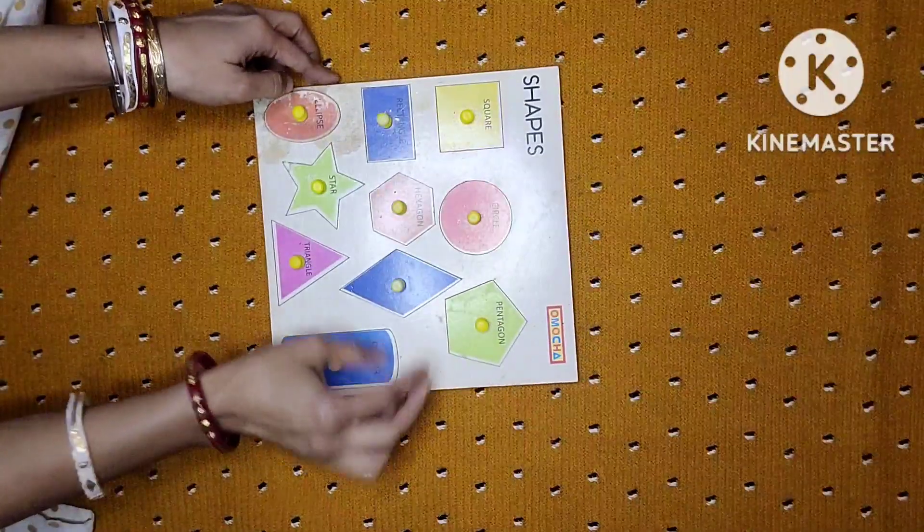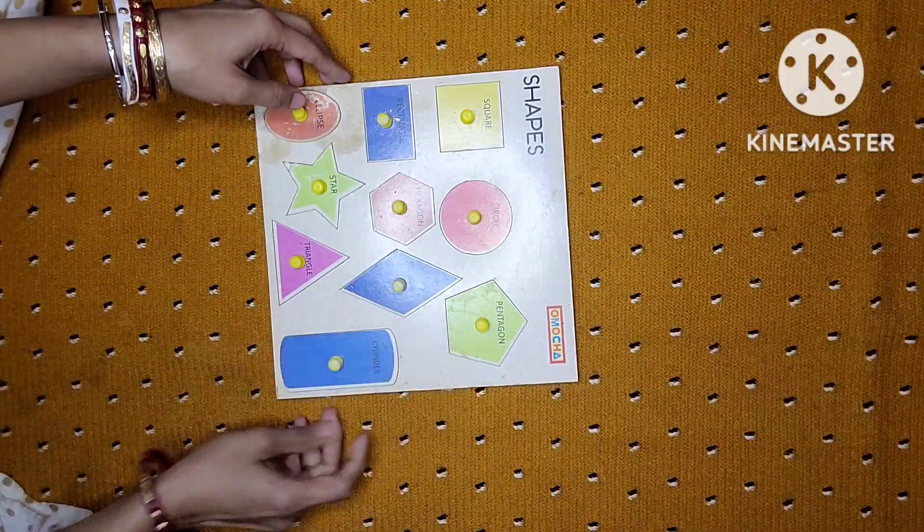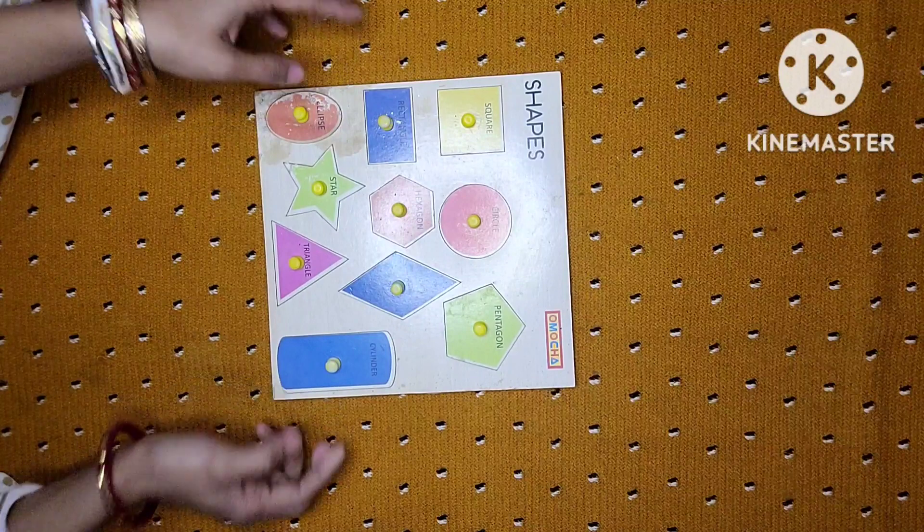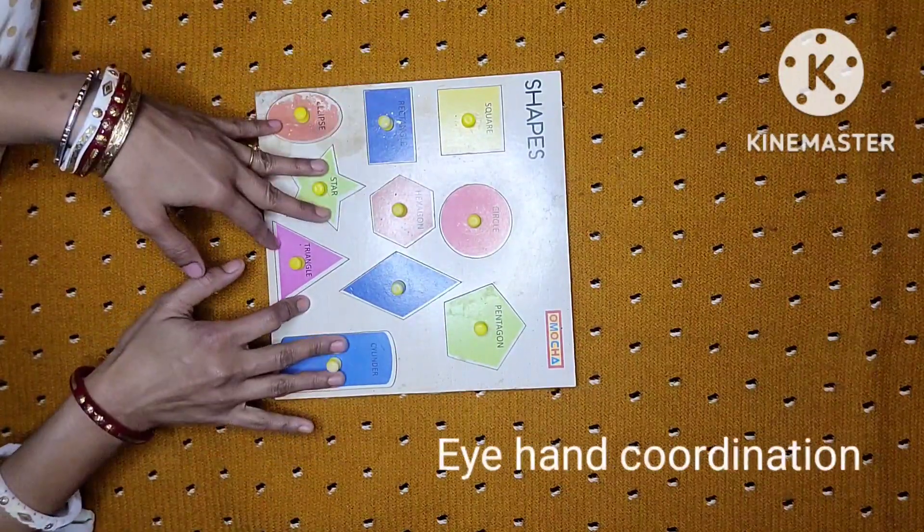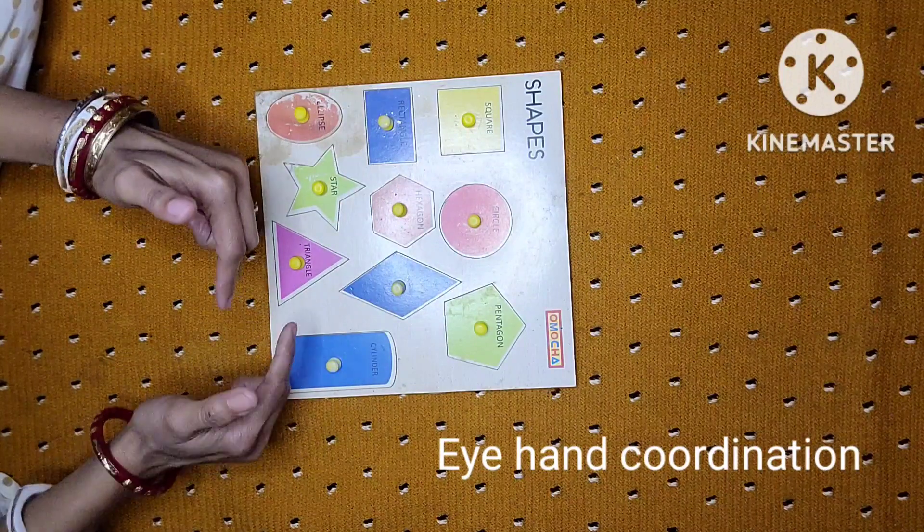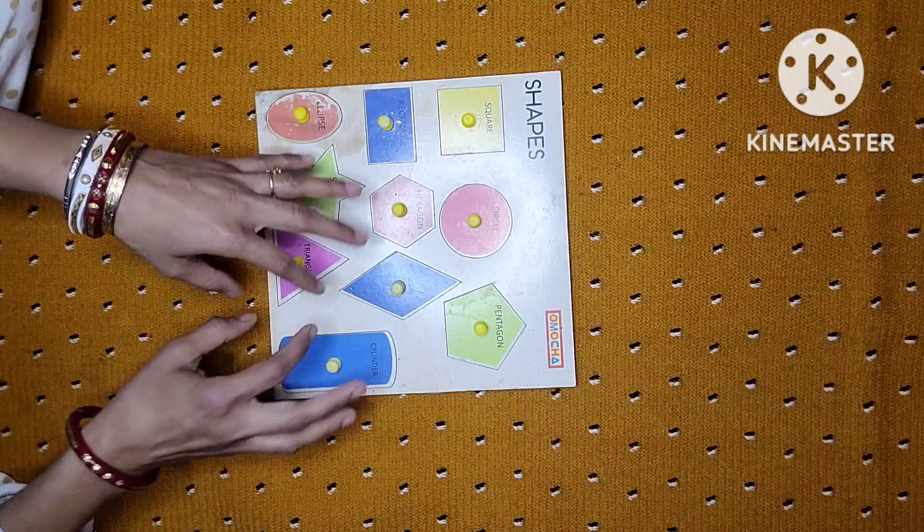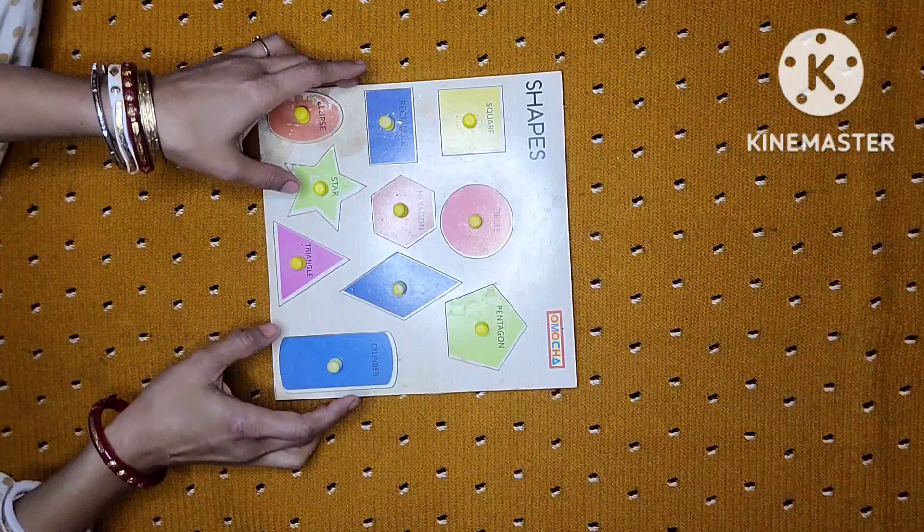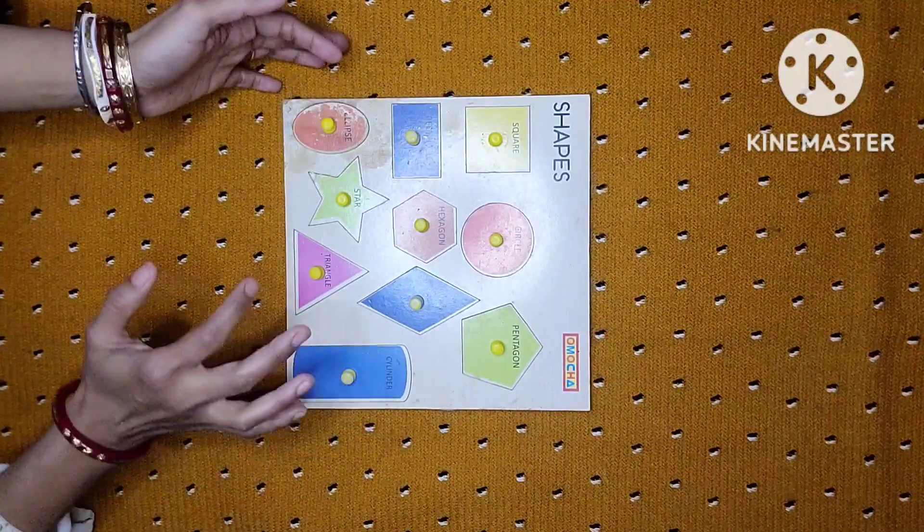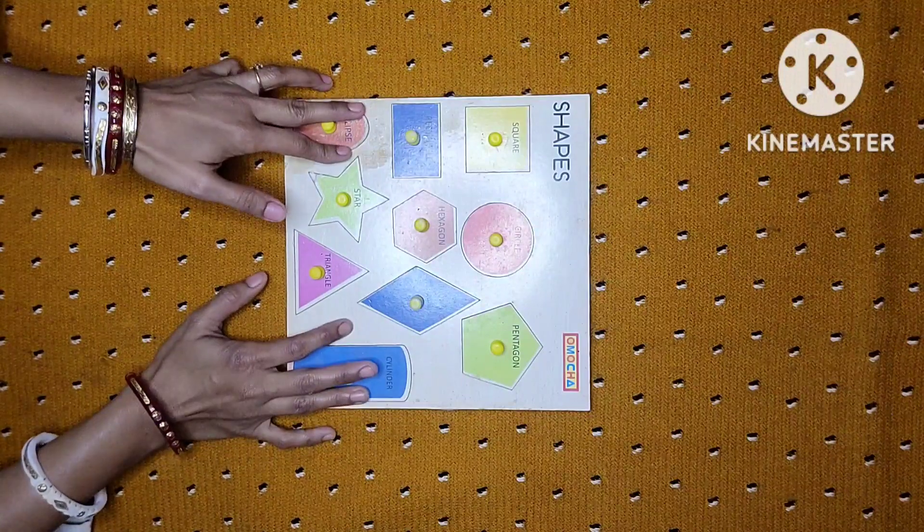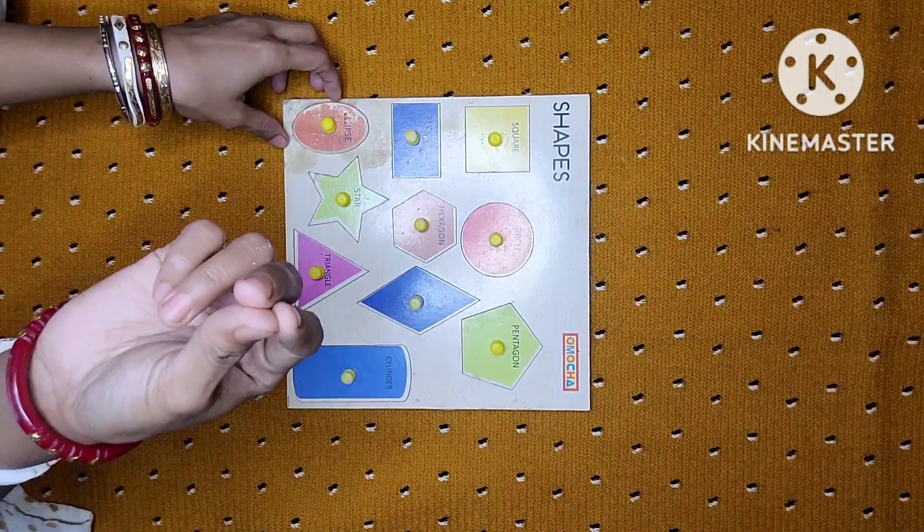Let me tell you about the benefits first. First benefit is eye-hand coordination, because when our eye sees and our hand works together it is called eye-hand coordination and it is very much necessary for a child's brain development.